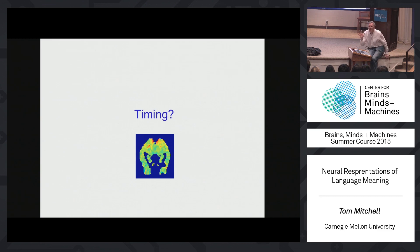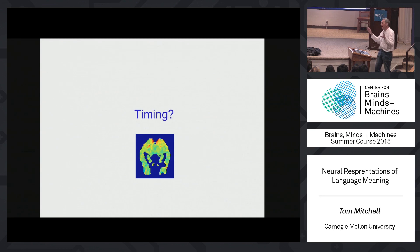In truth, your neural activity is not just one little snapshot. When you understand a word — do you know how long it takes? About 400 milliseconds. It turns out there is interesting brain activity dynamics during those 400 milliseconds.